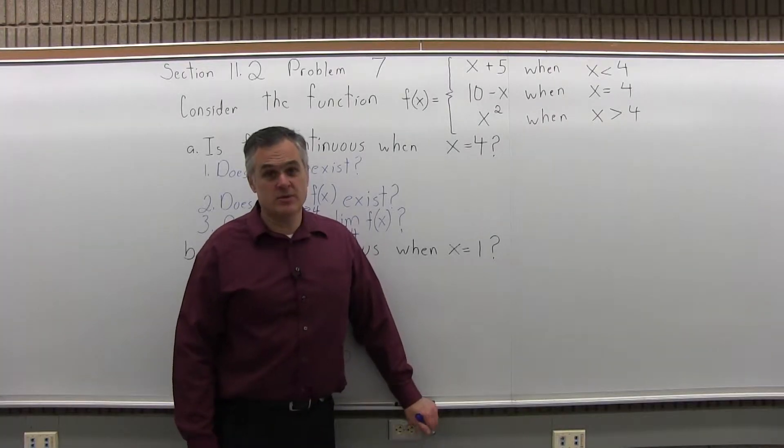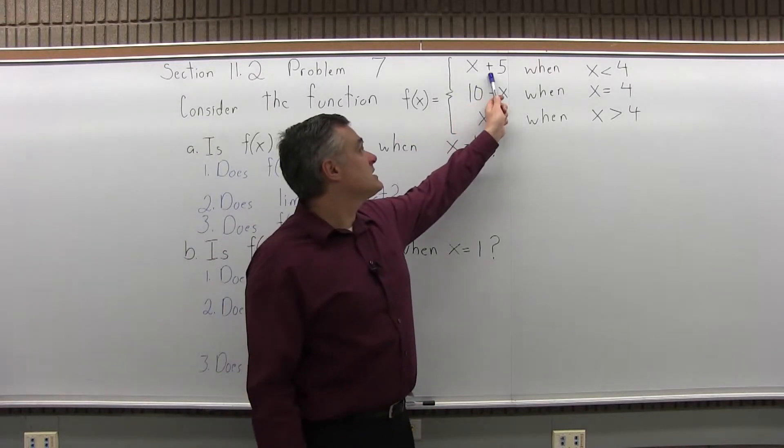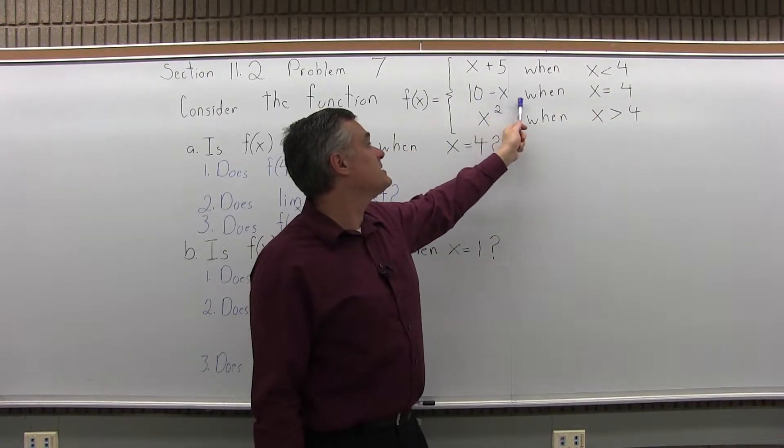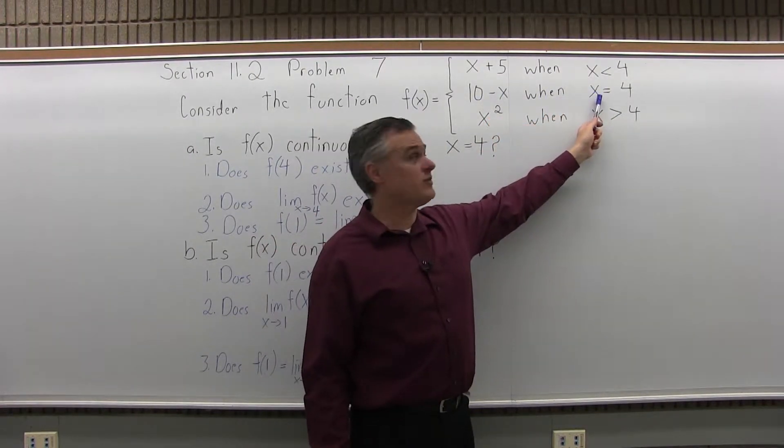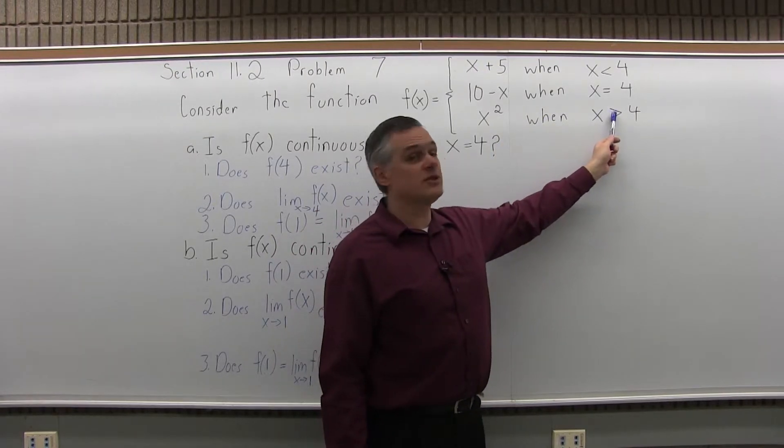This is Section 11.2, Problem 7. It says consider the function f of x equals x plus 5 when the input is smaller than 4, the output is 10 minus x when the input is equal to 4, and the output is x to the second power when the input is larger than 4.